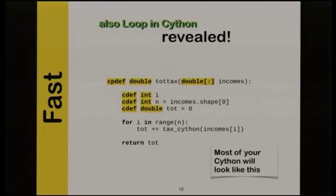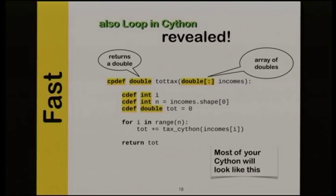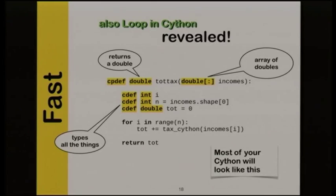This is what the loop looks like in Cython, and once you start using Cython a lot, most of your Cython code is going to look like this — it's almost idiomatic. You've got your return type — it returns a double. You have an array of doubles coming in. You declare all the types of the variables you'll use in the function. That's the entire function — that loop calls out to the Cython tax function and returns a total.